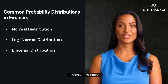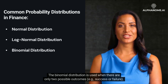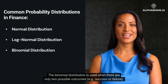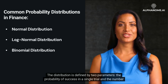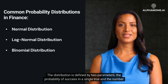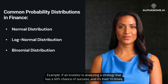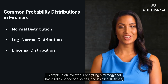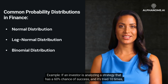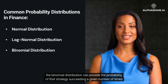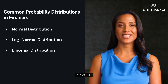Binomial Distribution: the binomial distribution is used when there are only two possible outcomes, such as success or failure. The distribution is defined by two parameters: the probability of success in a single trial and the number of trials. For example, if an investor is analyzing a strategy that has a 60% chance of success and it's tried 10 times, the binomial distribution can provide the probability of that strategy succeeding a given number of times out of 10.